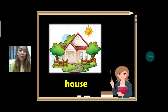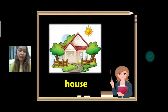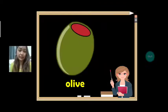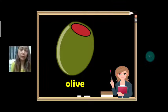How about house? House starts with letter H. What article are we going to use? We use A because it starts with letter H. How about olive? Olive starts with letter O. What article are we going to use? It's AN, because it starts with letter O which is a vowel letter.